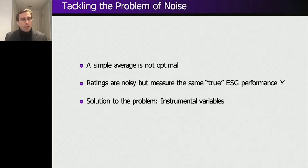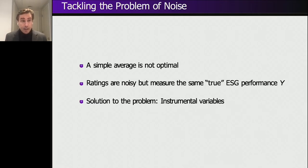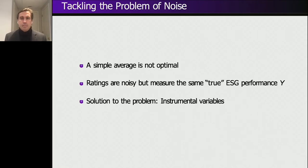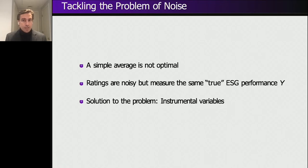One hypothesis we have is that all ratings, even though they sometimes measure different concepts of ESG — different indicators, different weights, and different focuses such as risk, impact, or dual materiality — they all capture some true ESG performance. And this is what we use in order to get rid of the noise. Our suggestion is what we call, in econometrics, an instrumental variable approach.